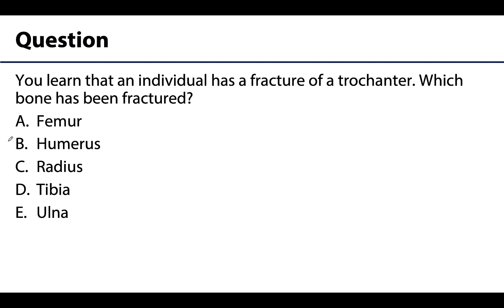Let's use the three charts just provided to answer this question: you learned that an individual has a fracture of a trochanter — which bone has been fractured? Is it A, femur; B, humerus; C, radius; D, tibia; or E, ulna? Pause the video to take your time to answer the question using those charts. Almost all the terms on those charts could be feasibly found on any bone, except for one which is only located on the femur — and this is the trochanter. So this makes A the correct answer.